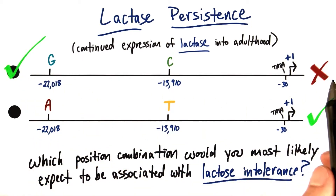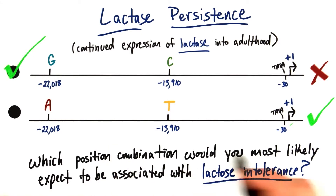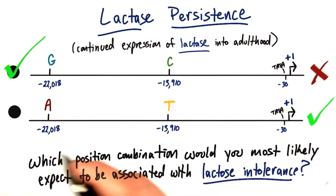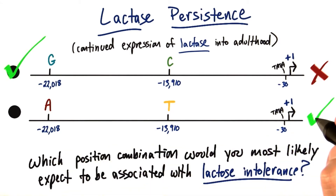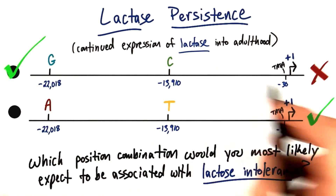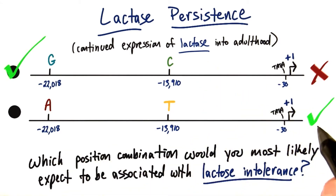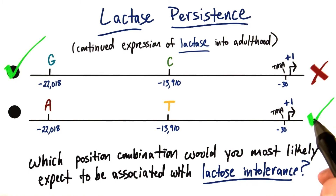So this top scenario will give us lactose intolerance, whereas the bottom scenario allows for maintained expression of lactase into adulthood. So we're going to be able to digest lactose, and we're not going to show symptoms of lactose intolerance.